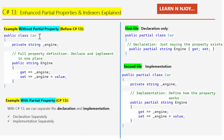Inside this class, I declared a private field named underscore engine of string type. Being private means it can only be accessed within the Car class, ensuring encapsulation. Then I wrote a full property definition — declared and implemented in one place — that allows outside code to read and write the value of the underscore engine private field. Even though we do not have direct access to the private field, we can access and set its value using the property from outside. The property has both a getter and a setter.